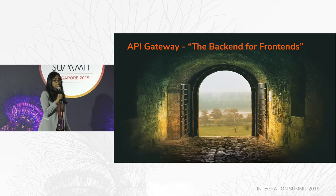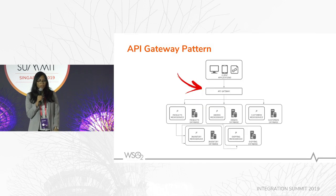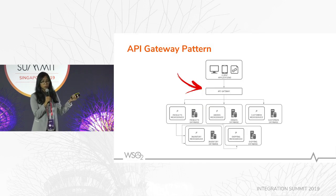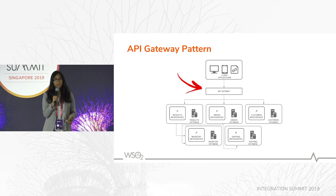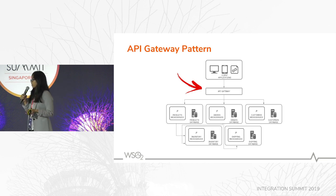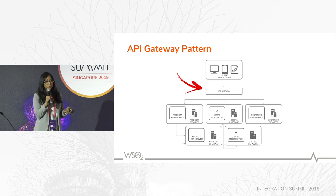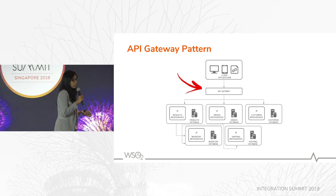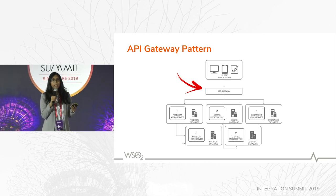A good approach is to use the API gateway, also known as the backend for frontends. Instead of talking to backend microservices directly, client applications talk to them through a single entry point — the API gateway. The API gateway will have well-defined REST APIs fronting these backend microservices. The API gateway is responsible for request routing, protocol transformations, and enforcing security, throttling, and monitoring.